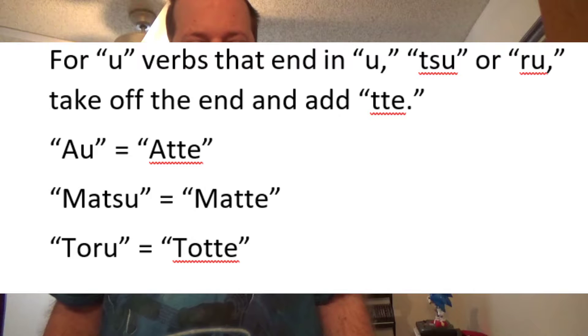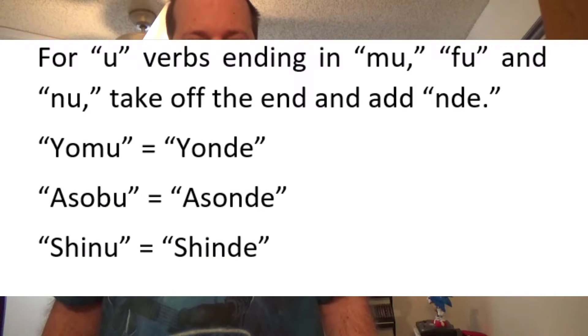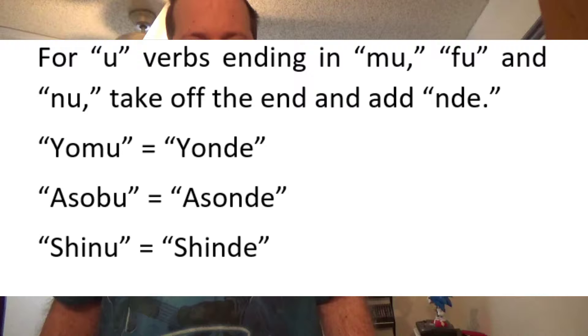For u-verbs ending in mu, bu, and nu, you take off the last part and add nde. Yomu becomes yonde, asobu becomes asonde, and shinu becomes shinde.